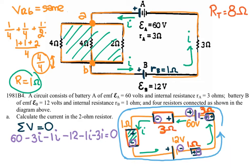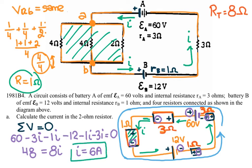Solving the equation: 60 − 12 = 48 on the voltage side, and 3 + 1 + 1 + 3 = 8 ohms of resistance. So 48 = 8I, which gives a current of I = 6 amps flowing through the circuit. This 6 amp current flows through every element in the series portion of the circuit.